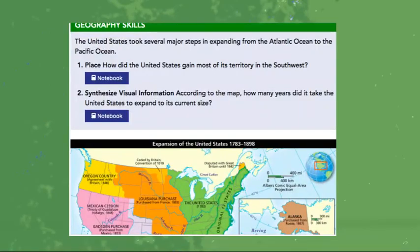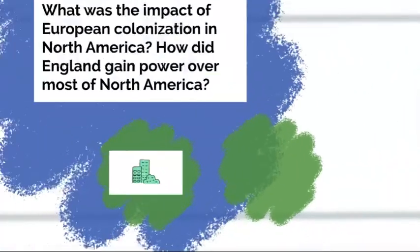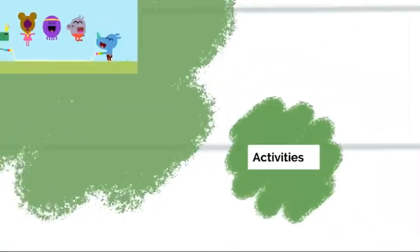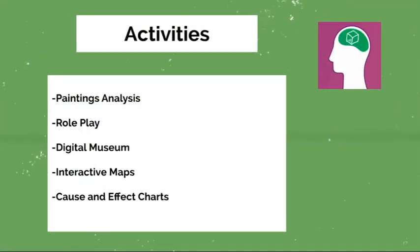Then we're going to use our geography skills. We always try to integrate a map analysis, so we're going to be looking at how the United States took several major steps in expanding the region from the Atlantic Ocean to the Pacific Ocean. Some of the activities we're going to be doing include painting analysis, role play, exploring digital museums for pictures, cause and effect charts, and interactive maps through our SEBAS.